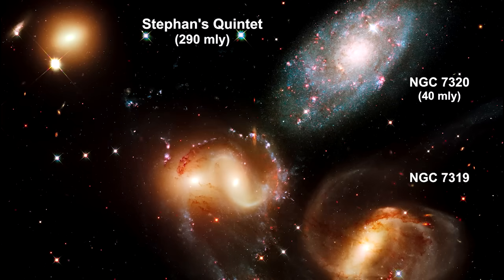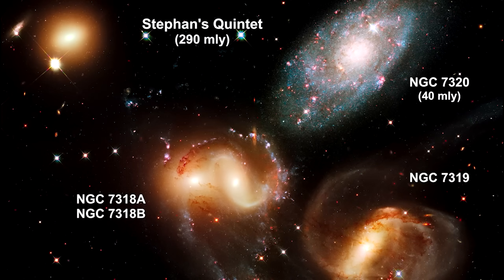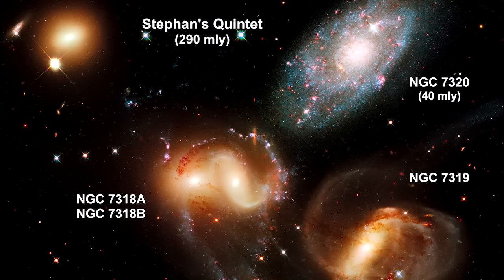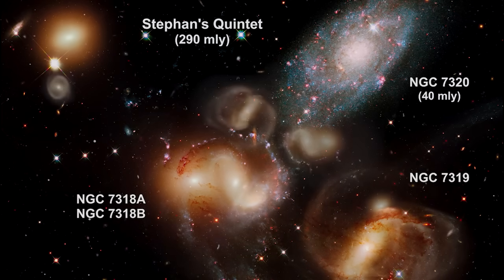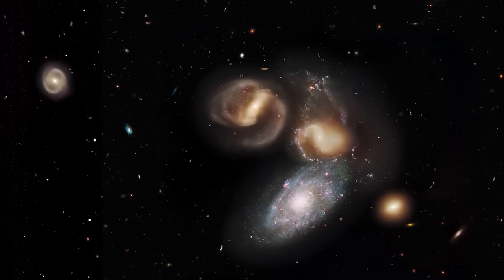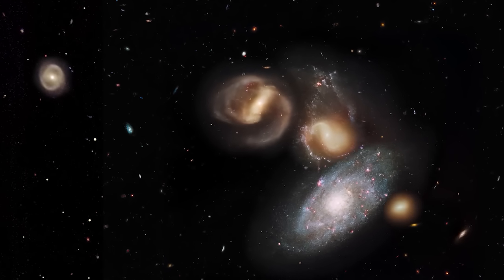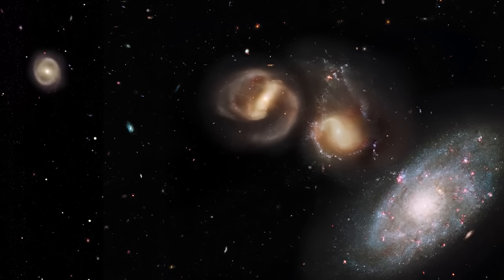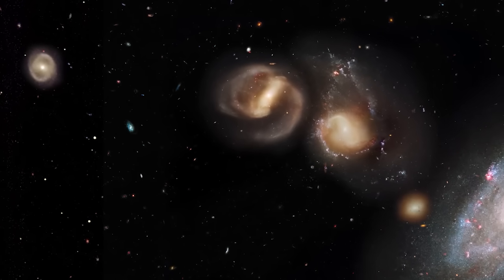In fact, it is 40 million light years away from Earth, while the other four, NGC 7317, NGC 7318A, NGC 7318B, and NGC 7319, are 290 million light years away.